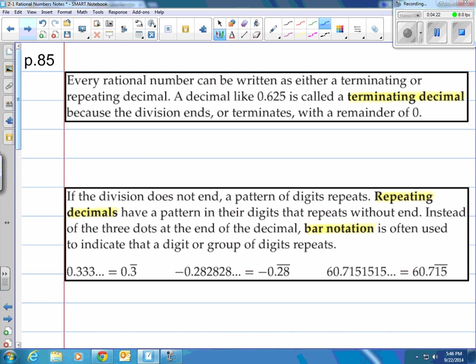Every rational number can be written as either a terminating or repeating decimal. A decimal like 0.625 is called a terminating decimal because the division ends or terminates with a remainder of 0. All those examples I showed you actually terminated. Some other terminating decimals that you know, like 1 half is equal to 0.5. How about another one? 4 fifths. That's equal to 0.8. And that means that the remainder is 0 when you're actually doing your long division.